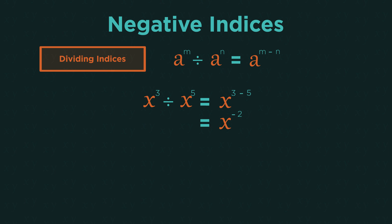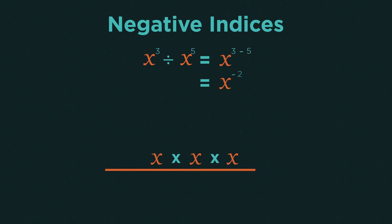If we write this question out in full as a fraction like this and then simplify it, we end up with everything cancelled on top, so the numerator is 1 and two x's in the denominator. So we have 1 divided by x squared.